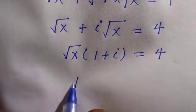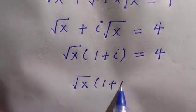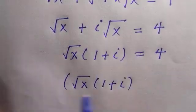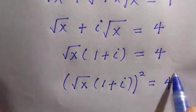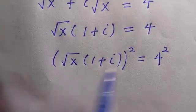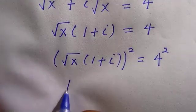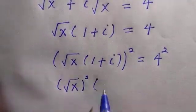The next thing is we are going to take the square of both sides. So there I have root x bracket 1 plus i all raised to power of 2 equals 4 square.